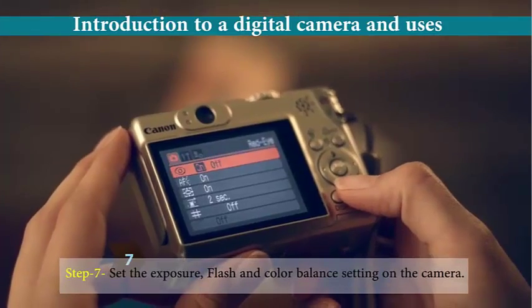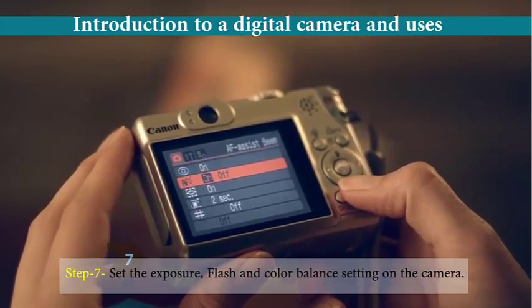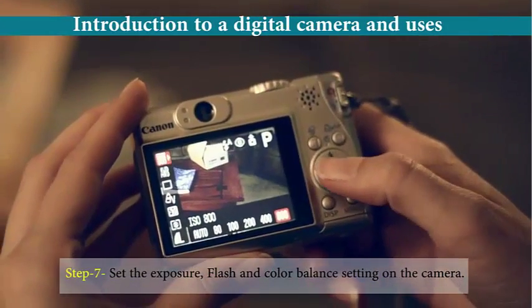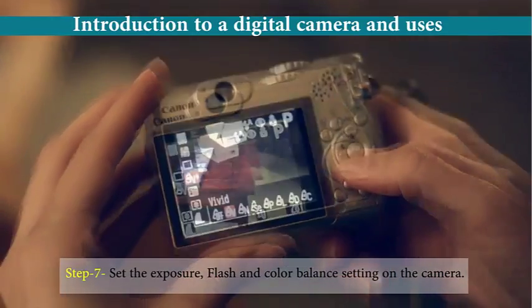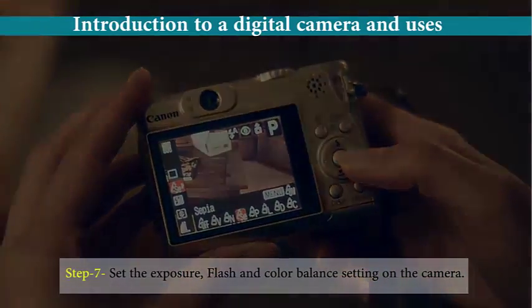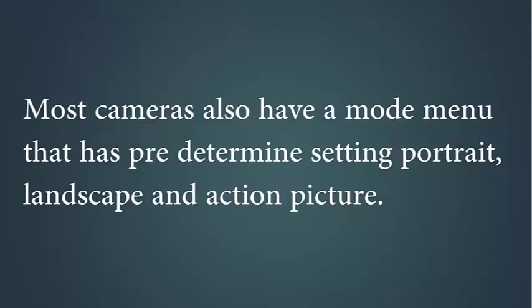Step 7: Set the exposure, flash, and color balance settings on the camera. Most cameras also have a mood menu that has predetermined settings, including portrait, landscape, and action picture modes.